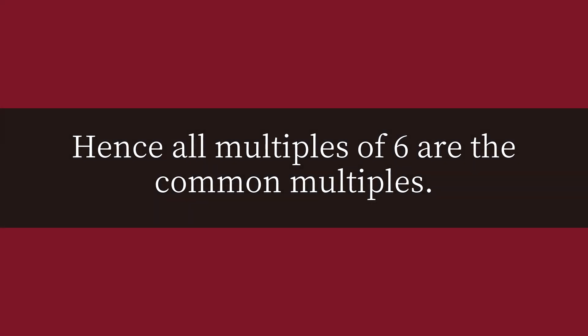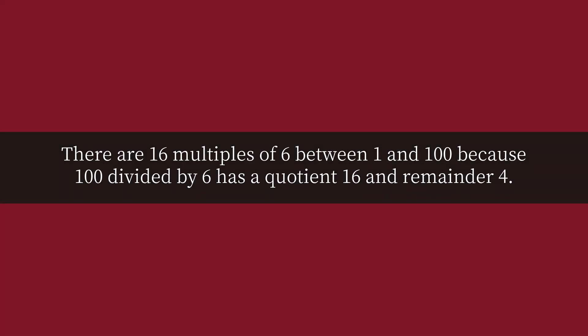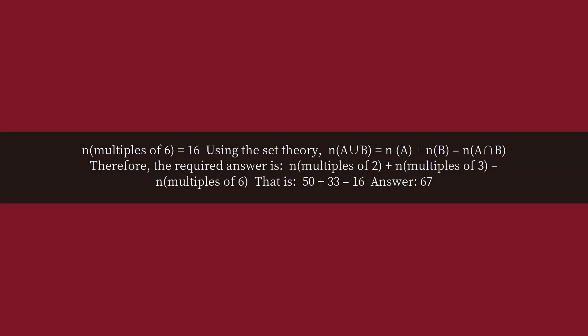Hence all multiples of 6 are the common multiples. There are 16 multiples of 6 between 1 and 100 because 100 divided by 6 has a quotient of 16 and a remainder of 4. n(multiples of 6) = 16. Using set theory: